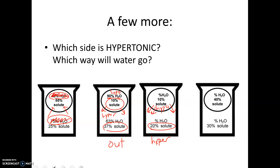In our last scenario, they didn't give us the water percentage but you don't need it. Inside is hypertonic because it has more solute; outside is hypotonic because it has less. Therefore water should go in. To verify: there's 70% water outside and 60% water inside — yes, water is going from where there's more water to where there's less.